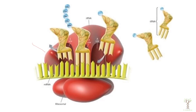Here we have a ribosome. The ribosome has a large subunit and a small subunit. These subunits come together and assemble around the messenger RNA. The messenger RNA was made from transcription and is carrying a nucleotide sequence. The ribosome is composed of ribosomal RNA.